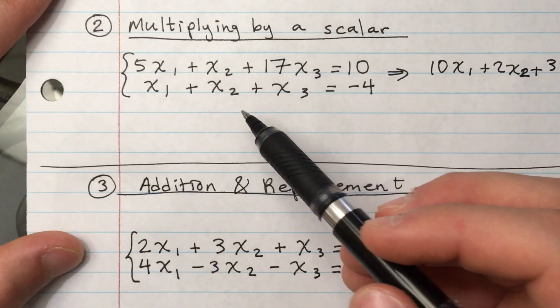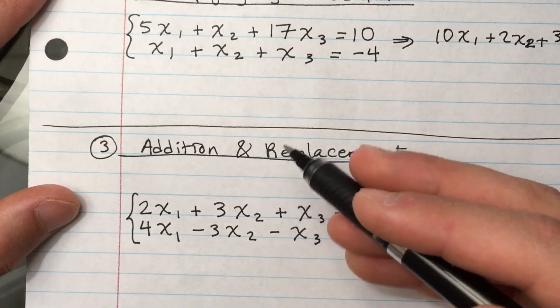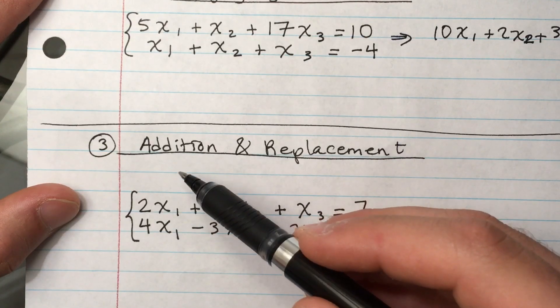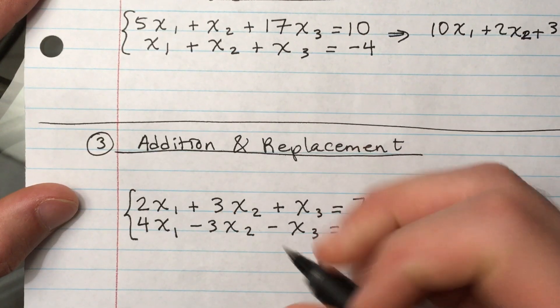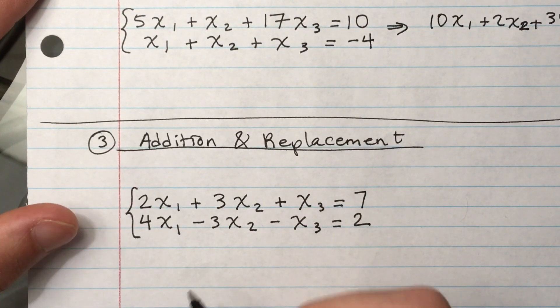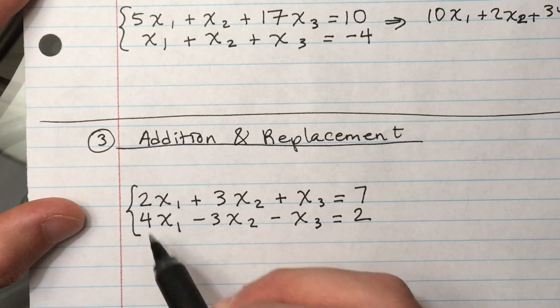Okay, so that was number two. And then for number three, addition and replacement. So you can't have just addition without replacement, so you need to have both of them.